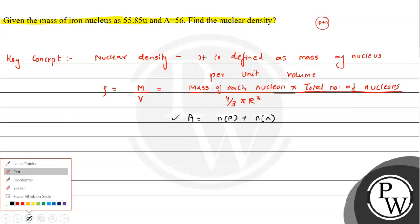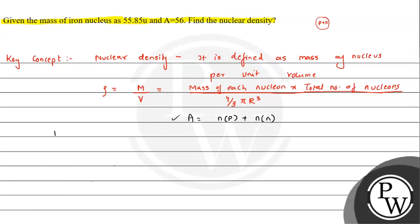According to Rutherford's experiment, that is of alpha scattering particle, volume of nucleus is directly proportional to mass number cube root. So experimentally it is found that volume equals 4 by 3 pi R cube, where R is R0 A raised to 1 by 3.